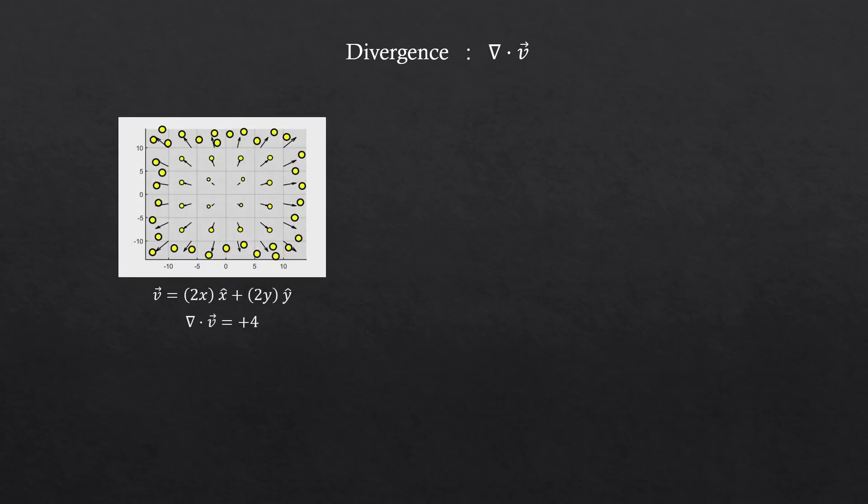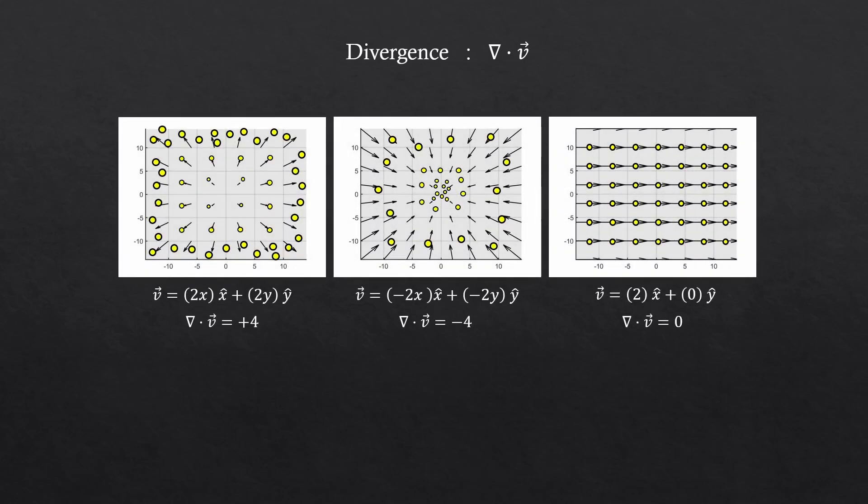We know that the divergence of a vector tells us about the spreading. If we're talking about a vector field that describes a fluid flow, in some sense, this is about stretching or compressing from the fluid's perspective. If the divergence is zero, then it means the fluid is incompressible, or we can say that the flow is incompressible. You can clearly see here that it's neither stretched or compressed. So the divergence of zero means that.